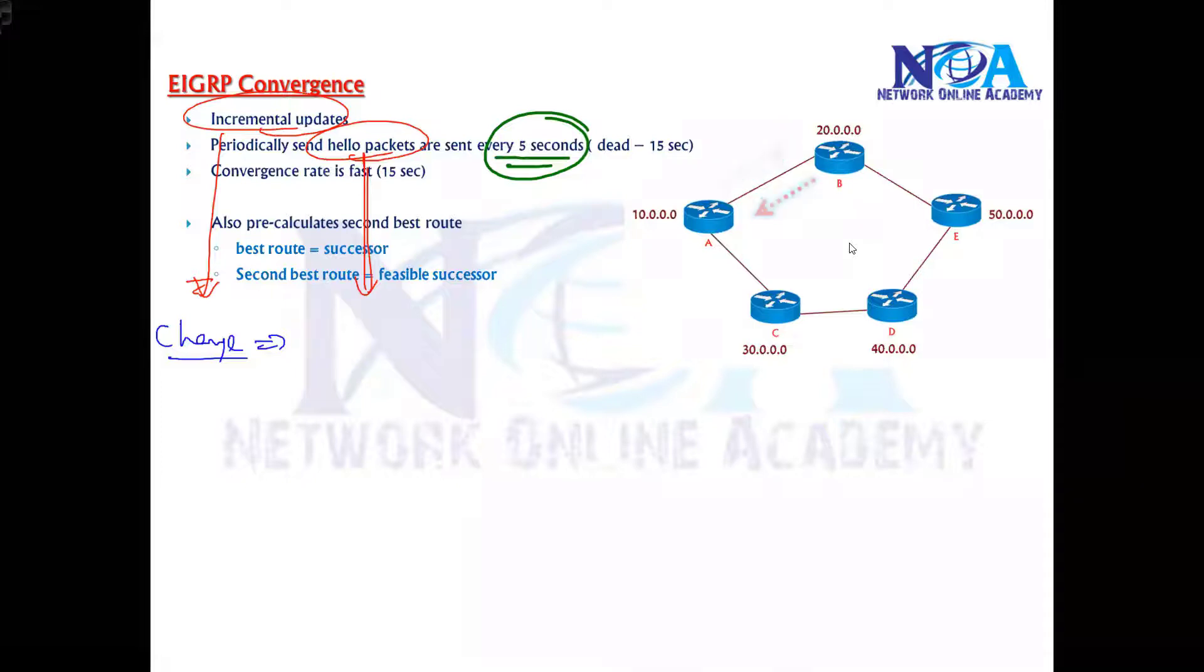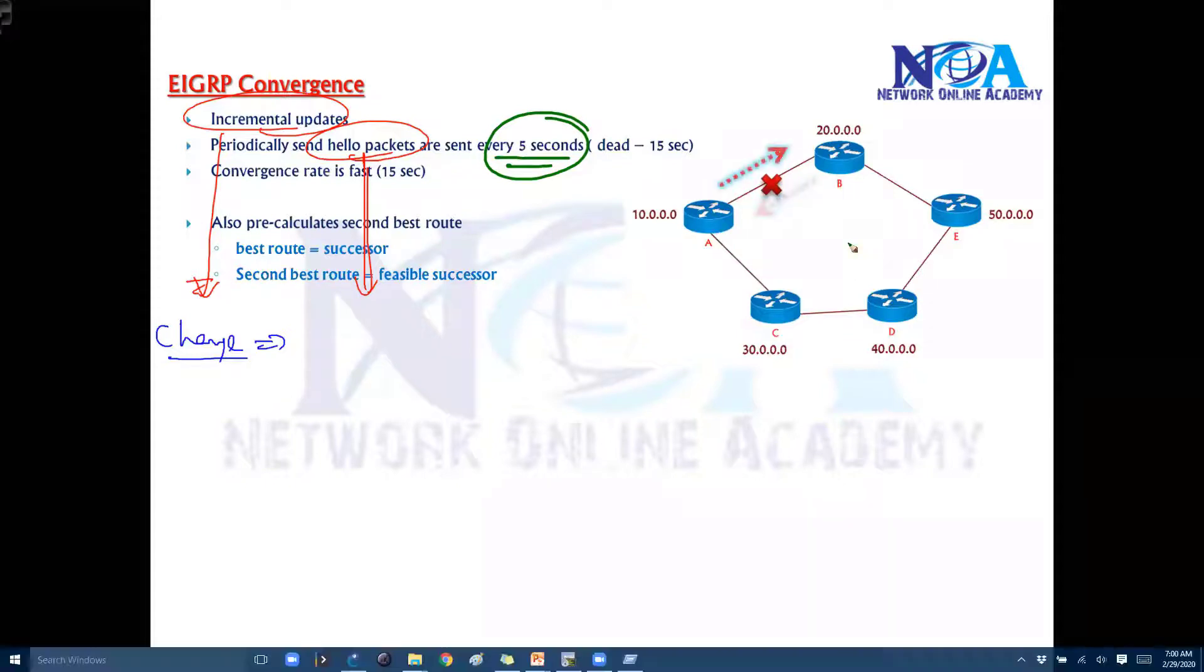So let's say due to some reason maybe the interface goes down or maybe the EIGRP is removed or you want to reconfigure whatever happens. If the link fails or if some problem between these two neighbors then it will stop sending the hello messages because that particular neighborship will not work. Because the neighborship will go down.